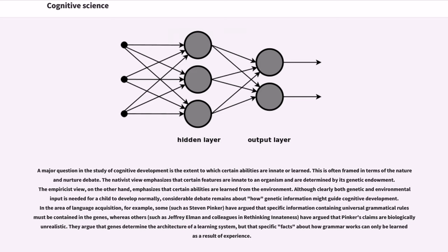In the area of language acquisition, for example, some, such as Steven Pinker, have argued that specific information containing universal grammatical rules must be contained in the genes, whereas others, such as Jeffrey Elman and colleagues in Rethinking Innateness, have argued that Pinker's claims are biologically unrealistic. They argue that genes determine the architecture of a learning system, but that specific facts about how grammar works can only be learned as a result of experience.